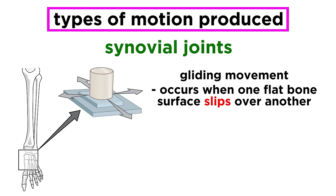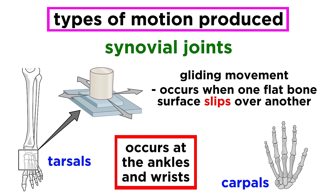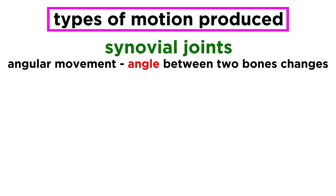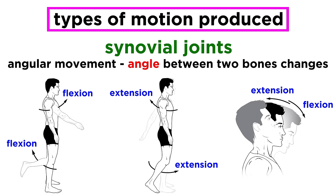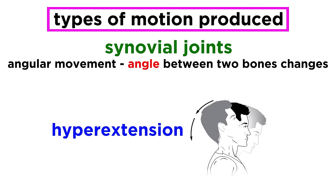Gliding movement happens when one flat bone surface slips over another. This happens at the intercarpal and intertarsal joints, allowing for left and right wrist motion. Angular movement happens when the angle between two bones changes. An example is flexion, which decreases the angle of the joint, like when bending the head forward or bending forward at the waist. The opposite is extension, which increases the angle of the joint — straightening your neck, elbow, or knee. Hyperextension goes beyond this, like bending your head back or bending backwards at the waist.